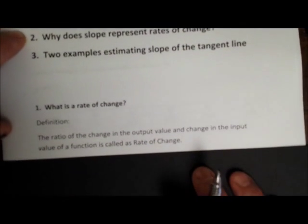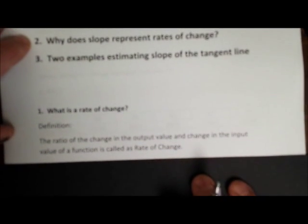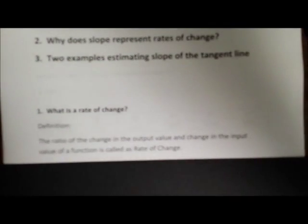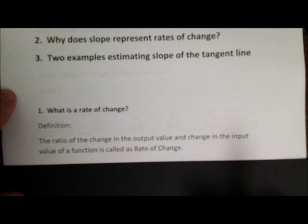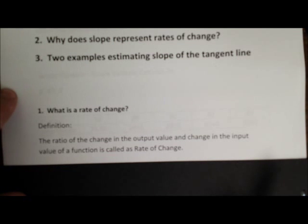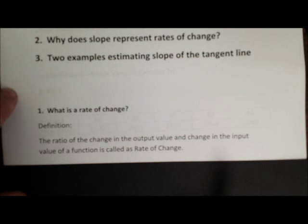So here is a formal definition for a rate of change. I won't ever ask you for a formal definition — I prefer you just know it in your own words — but I feel it's kind of my duty to still give you this formal definition. A rate of change is a ratio of the change in the output value and the change in the input value of a function.